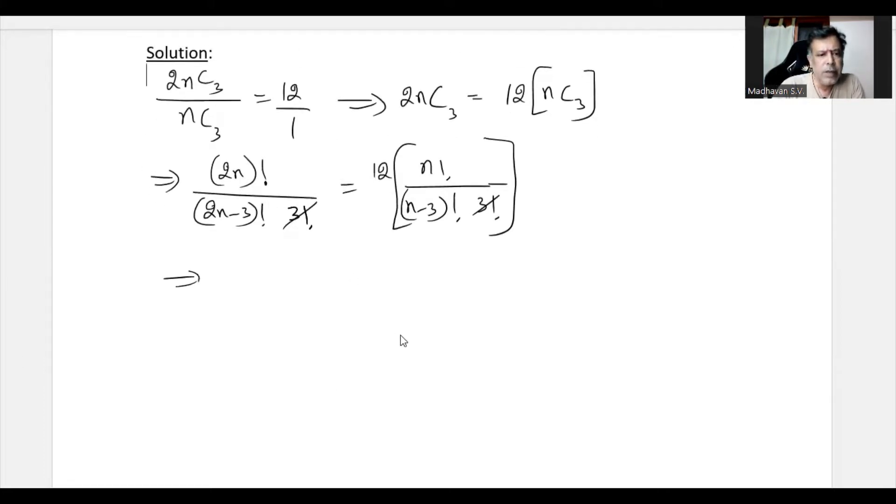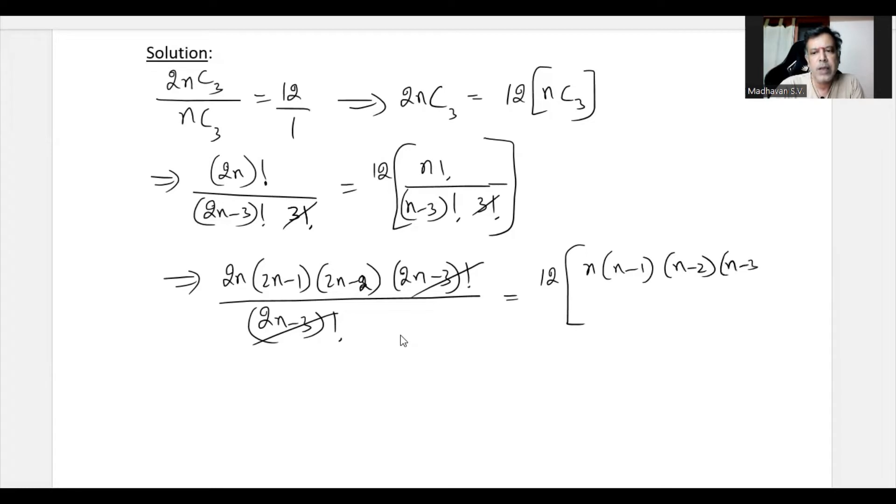Further, we can expand the numerator as 2N times (2N-1) times (2N-2) times (2N-3) factorial. I will stop it there because there is a (2N-3) factorial in the denominator which can be cancelled. This is equated to 12 times N factorial, which can be expanded as N times (N-1) times (N-2) times (N-3) factorial divided by (N-3) factorial.